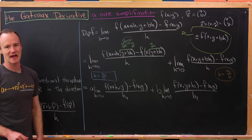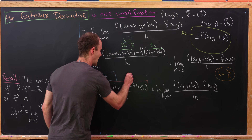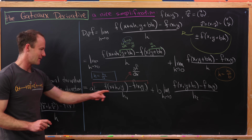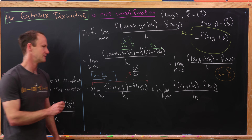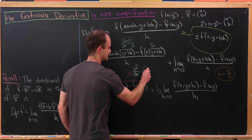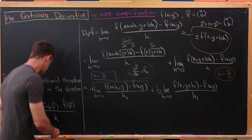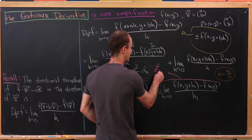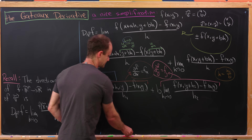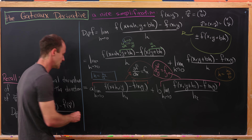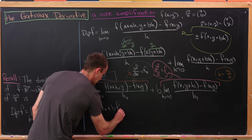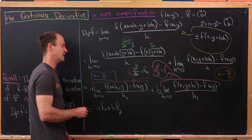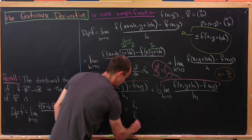The first limit is exactly the definition of the partial derivative of f with respect to x — we're holding y constant and differentiating with respect to x, written ∂f/∂x or fₓ. The second limit is the partial derivative with respect to y, written ∂f/∂y or fᵧ. So the directional derivative turns into a·fₓ + b·fᵧ, and translating to vector language this is the vector (fₓ, fᵧ) dot-producted with the vector (a, b).